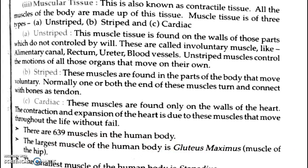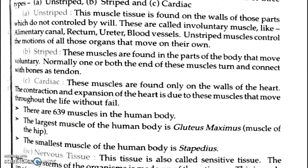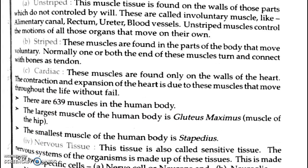The largest muscle of the human body is the gluteus maximus, located in the hip. The smallest muscle of the human body is the stapedius, which is present in the tympanic cavity of the middle ear.